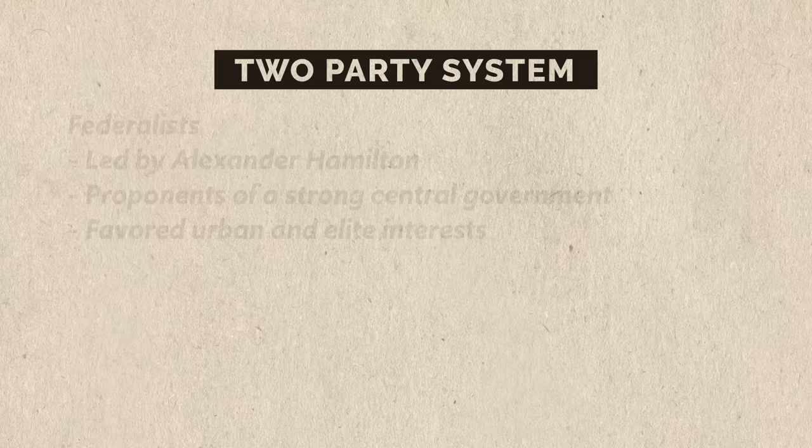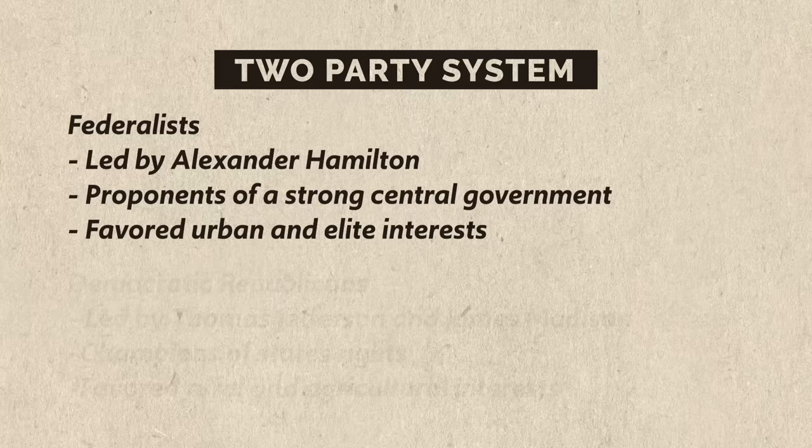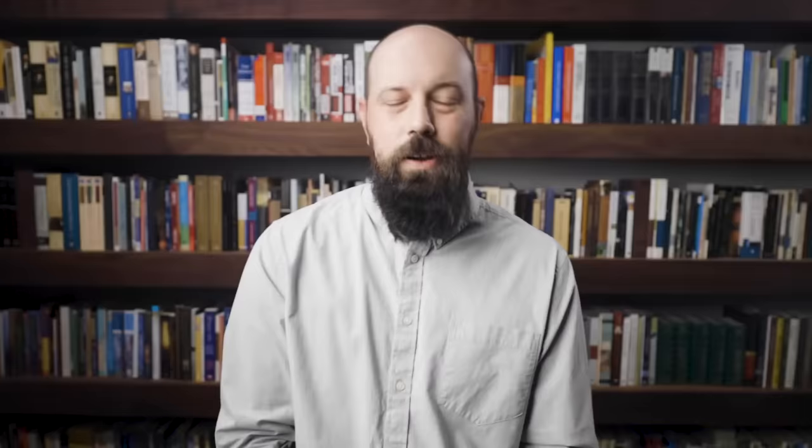All these issues — the National Bank, France, and the Whiskey Rebellion — had a way of firing up political rivalries in the halls of power. This is where we get the emergence of the two-party political system of America. The two factions had their roots in the Federalist-Anti-Federalist debates around the Constitutional Convention. The Federalists were led by Alexander Hamilton, and they were proponents of a strong central government who favored urban and elite interests. The Democratic-Republicans were led by Thomas Jefferson and James Madison; they were champions of states' rights and favored more rural and agricultural interests.